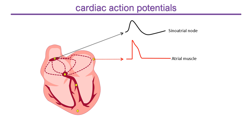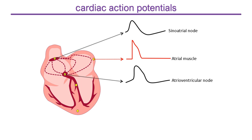The action potential reaching the atrioventricular node has a similar shape to those recorded from the sinoatrial node. That is because the atrioventricular node can also act as a pacemaker to keep the ventricles beating if the sinoatrial node fails, and its action potential enables it to act as a filter to limit the number of impulses that reach the ventricles if they arrive too frequently.